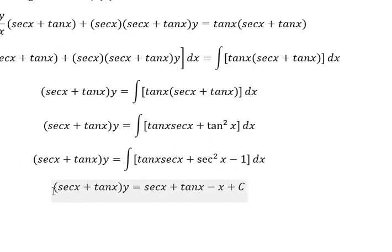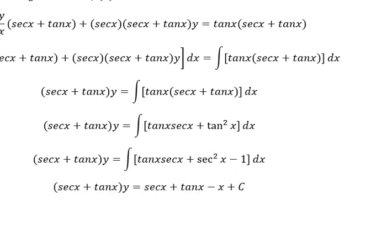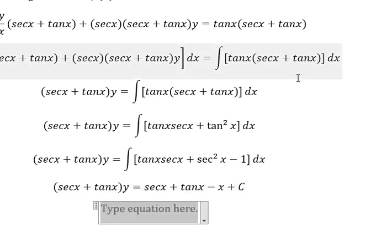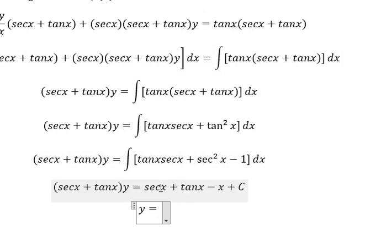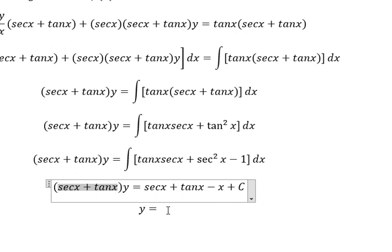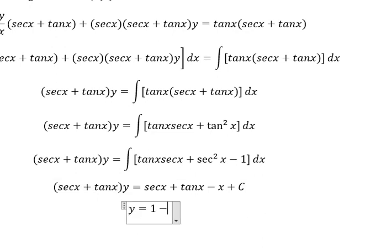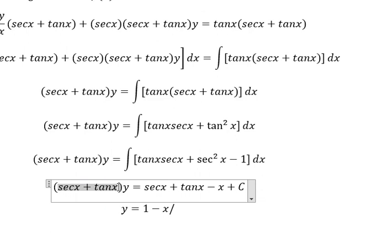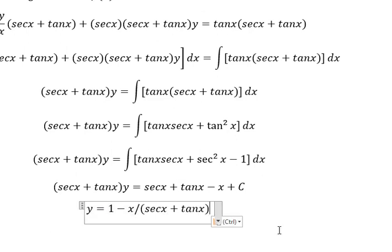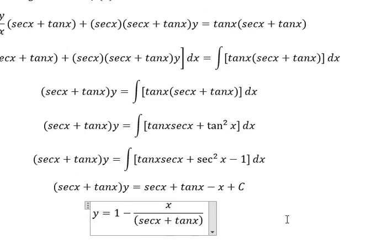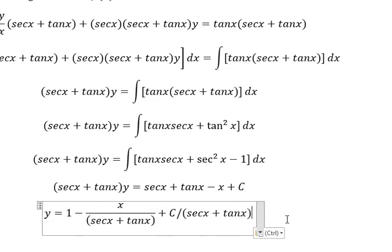Later we divide both sides by this one. Secant of x plus tan x divided by secant of x plus tan x — you will get number one. So we have x over this one, and we put c over this one.